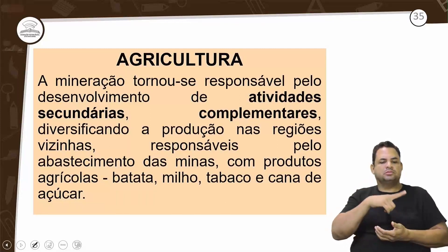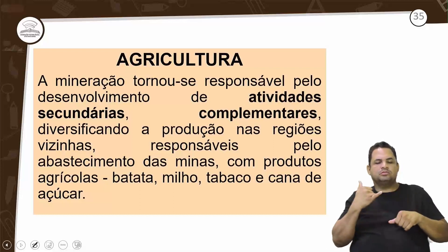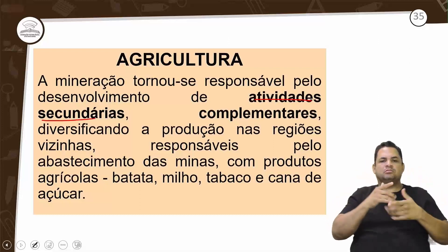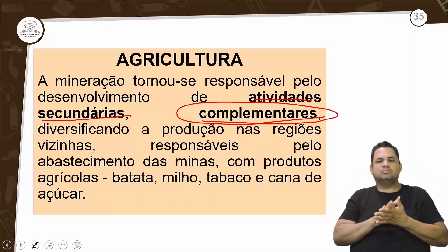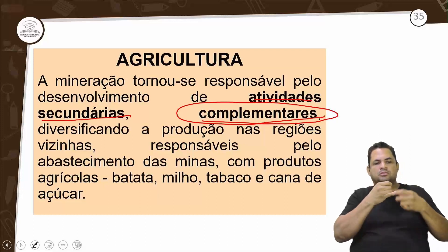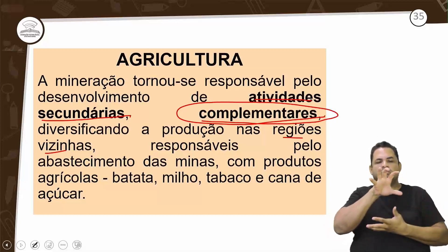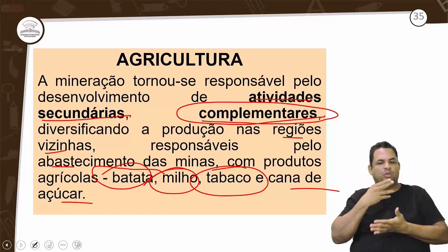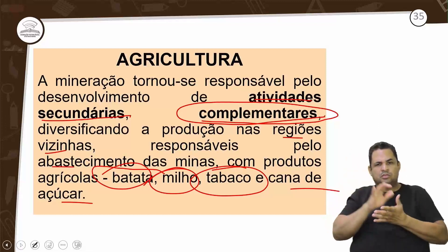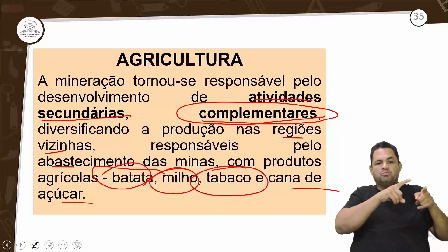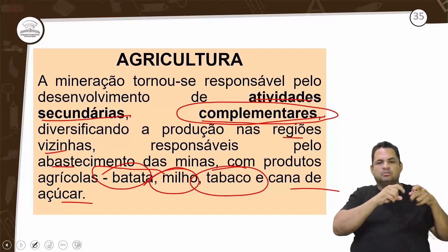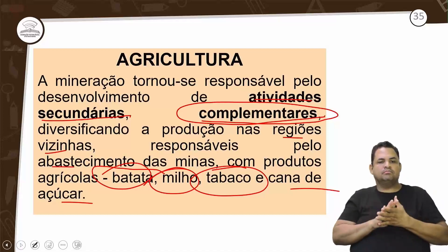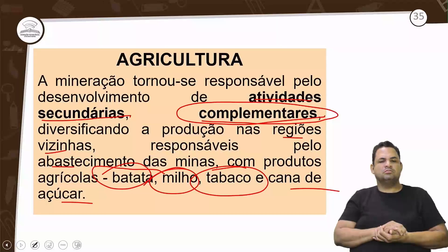E tem agricultura? A mineração torna-se responsável pelo desenvolvimento de atividade secundária para complementar — diversificando a produção da região vizinha. Essa produção abastecia as minas com produtos agrícolas: batata, milho, tabaco, cana-de-açúcar e gado. Mas a agricultura vai ser apenas uma parte desse sistema.